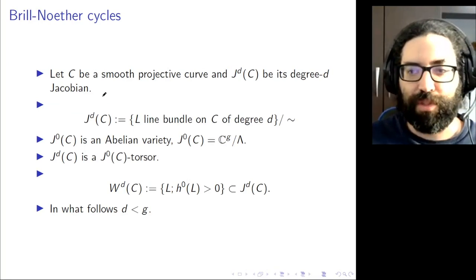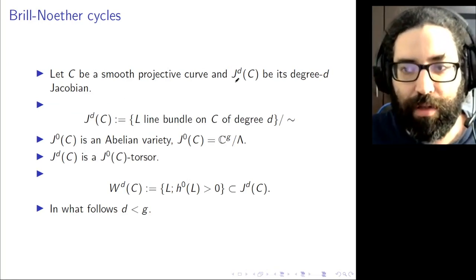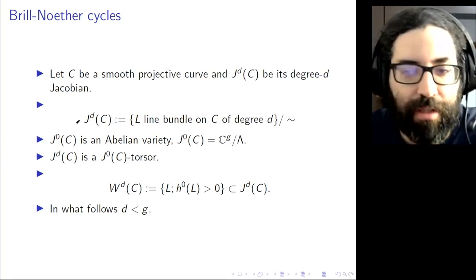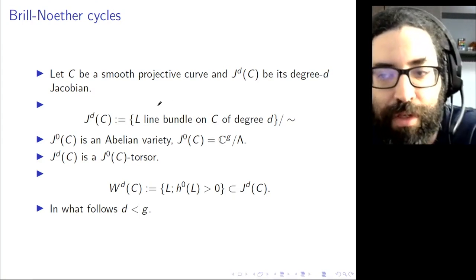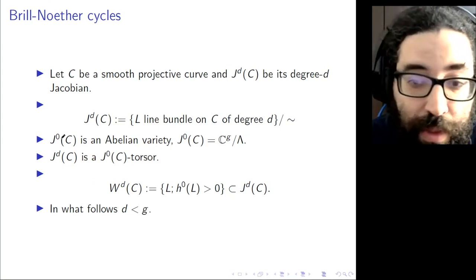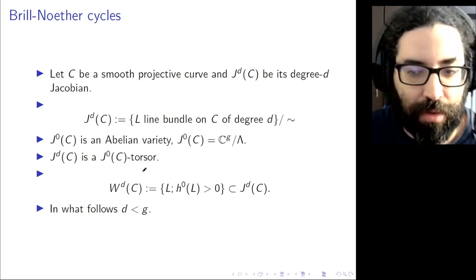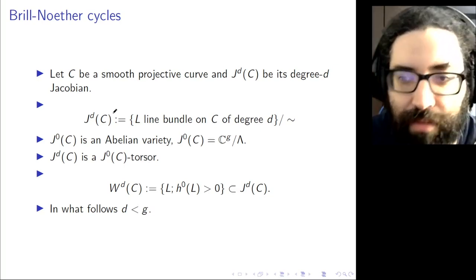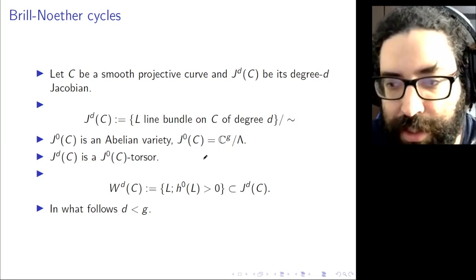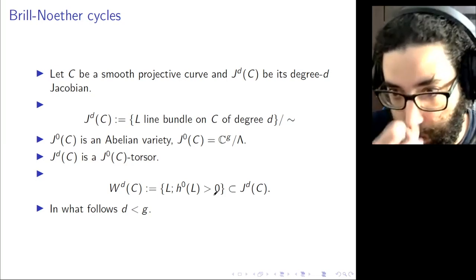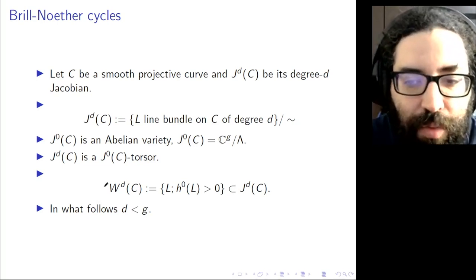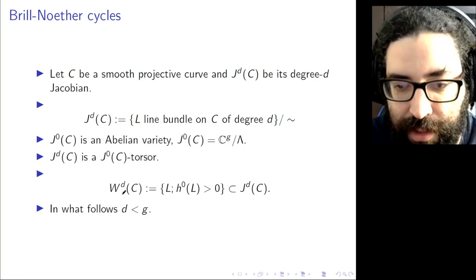We begin with a smooth projective curve and call JD its degree d Jacobian. JD is the space that parametrizes line bundles of degree d on this curve. When you look at J0, it's an abelian variety with a product given by the tensor product. For a complex curve, this Jacobian is essentially given by C^g — where g is the genus of the curve — quotient by some lattice. The degree d Jacobian is essentially a J0-torsor.